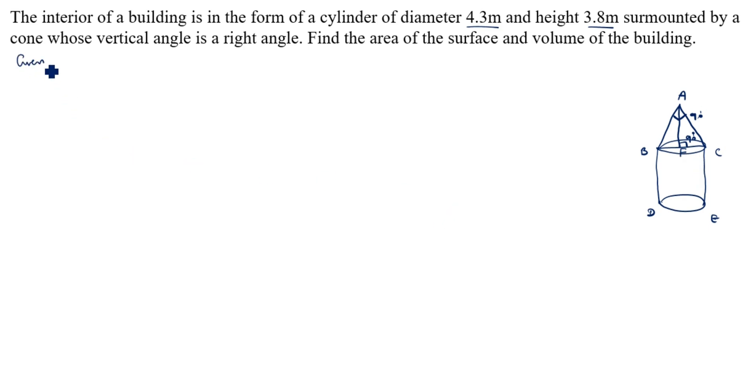What is given data? First we will write given data: diameter of cylinder equal to 4.3 meter. Radius of cylinder is equal to 4.3 divided by 2 is equal to 2.15 meter. Height of the cylinder is equal to 3.8 meter. What we need to find: surface area of building and volume of building. Solution.